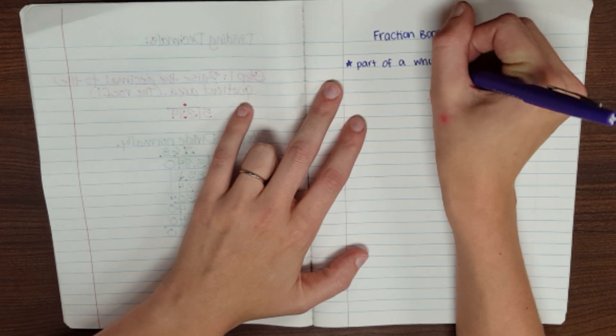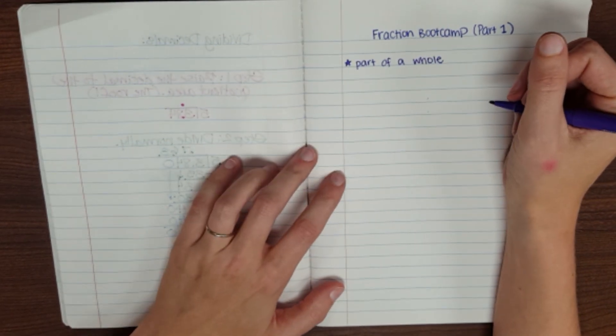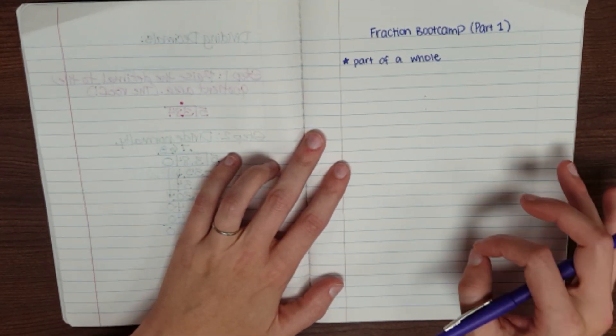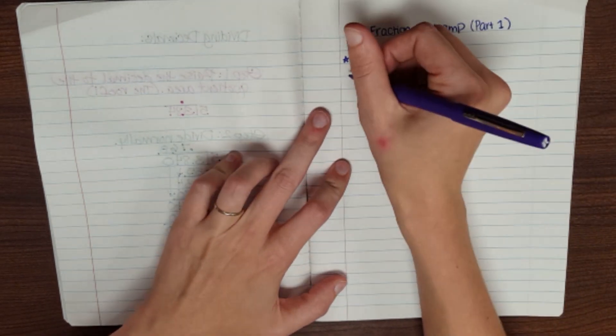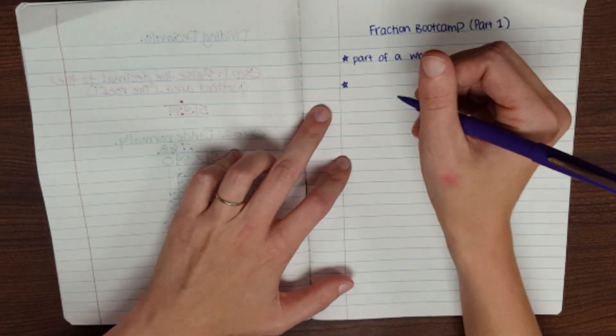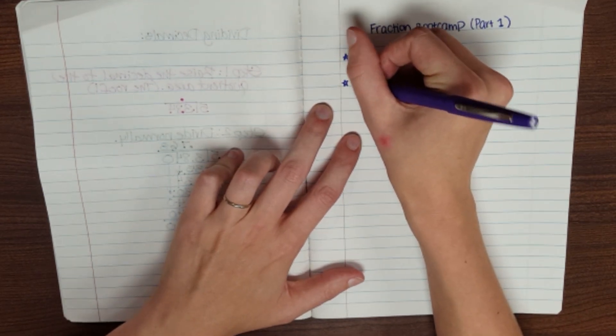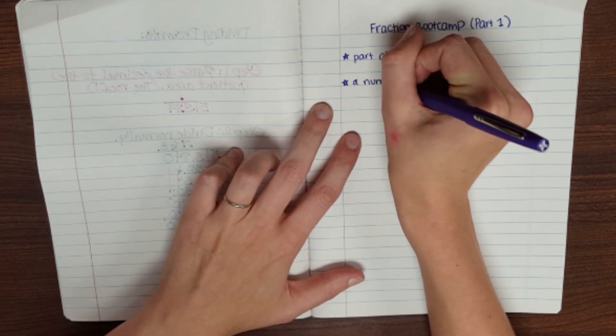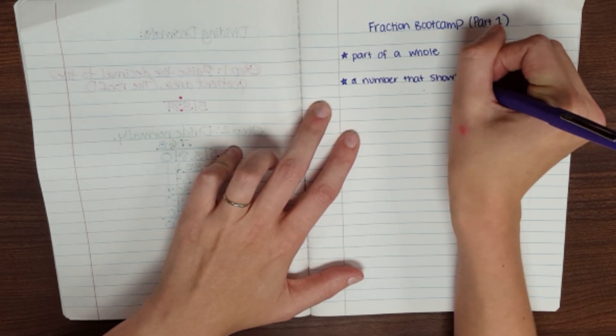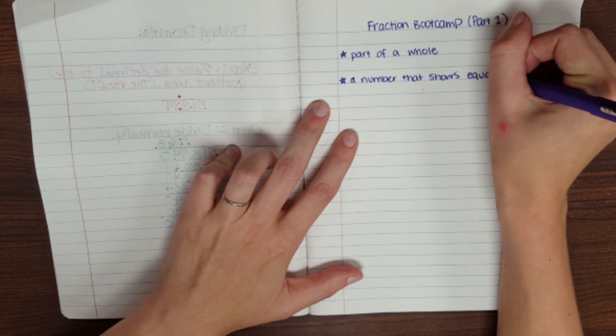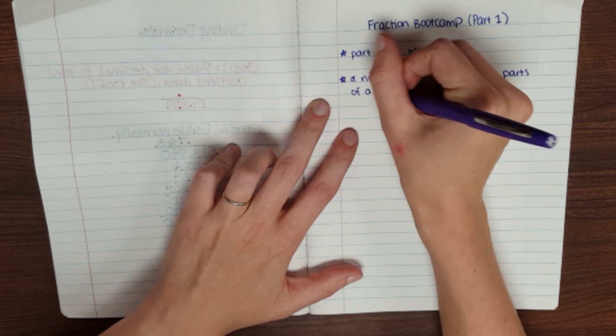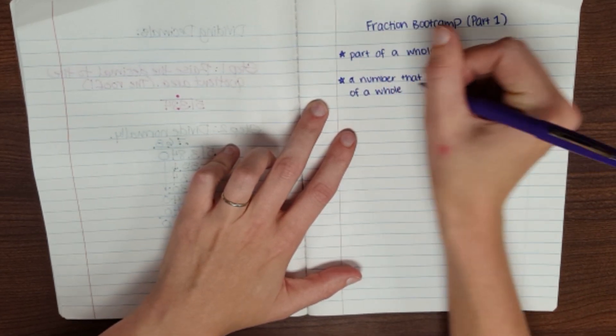Part of a whole. For you as a fifth grader, that means it is a number that is less than one, but it's still more than nothing. So all these fractions we're talking about are between zero and one. So another way you can think about this is that it's a number that shows equal parts of a whole, or a set of objects.